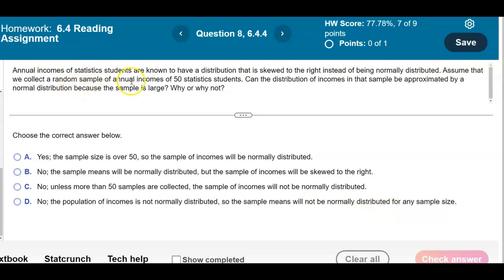Well, if we take a look here, the sample means, okay, the sample means will be normally distributed. However, the sample of incomes is what will be skewed to the right.